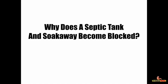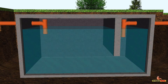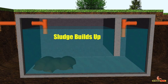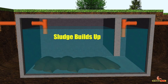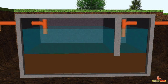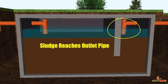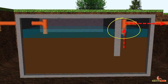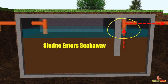Why does a septic tank and soak away become blocked? Well, the biggest problem is sludge. The sludge is made up of fat and grease, and over time this sludge builds up from the bottom of the tank and rises upwards. In time, this sludge reaches the outlet pipe, and once it does so, it then makes its way from the septic tank towards the soak away pipes.